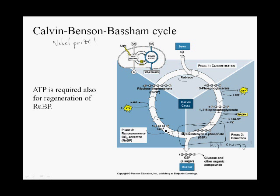What then happens is a complex series of rearrangements of those five glyceraldehyde 3-phosphate molecules, where you get three molecules of ribulose phosphate — three five-carbon sugars with one phosphate each. These are then each phosphorylated using a phosphate from ATP to regenerate three molecules of RuBP.